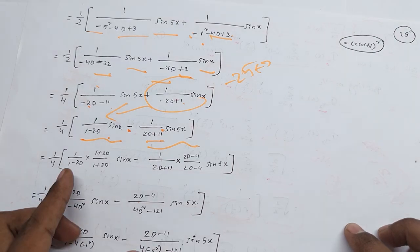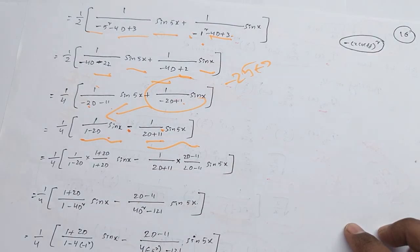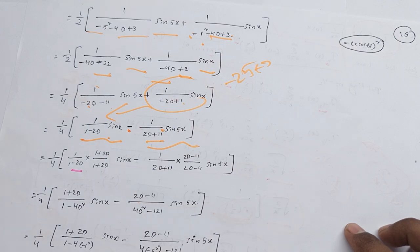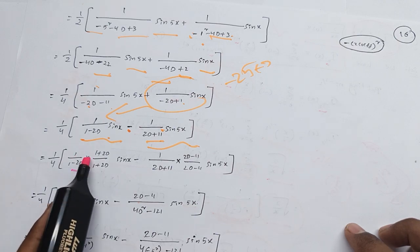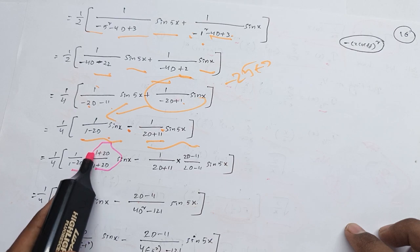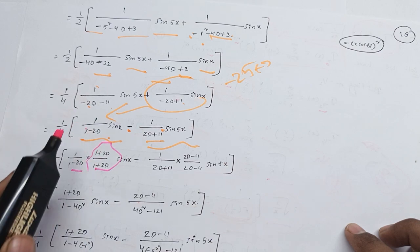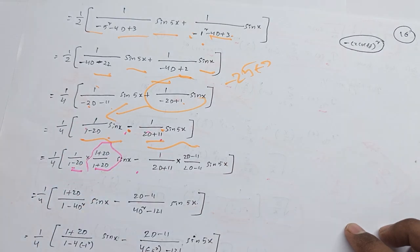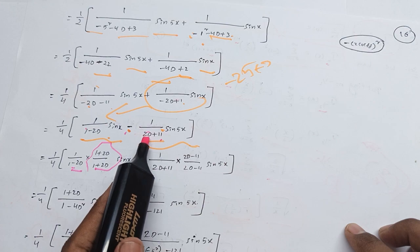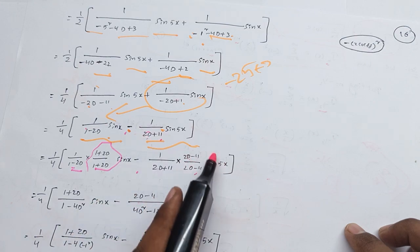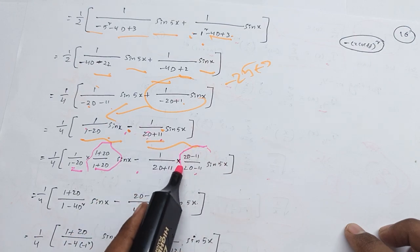We expand using 1 plus 2D, applying the binomial expansion: 1 plus 2D, 1 plus 2D repeatedly. Then 2D minus 11 and 2D minus 11.